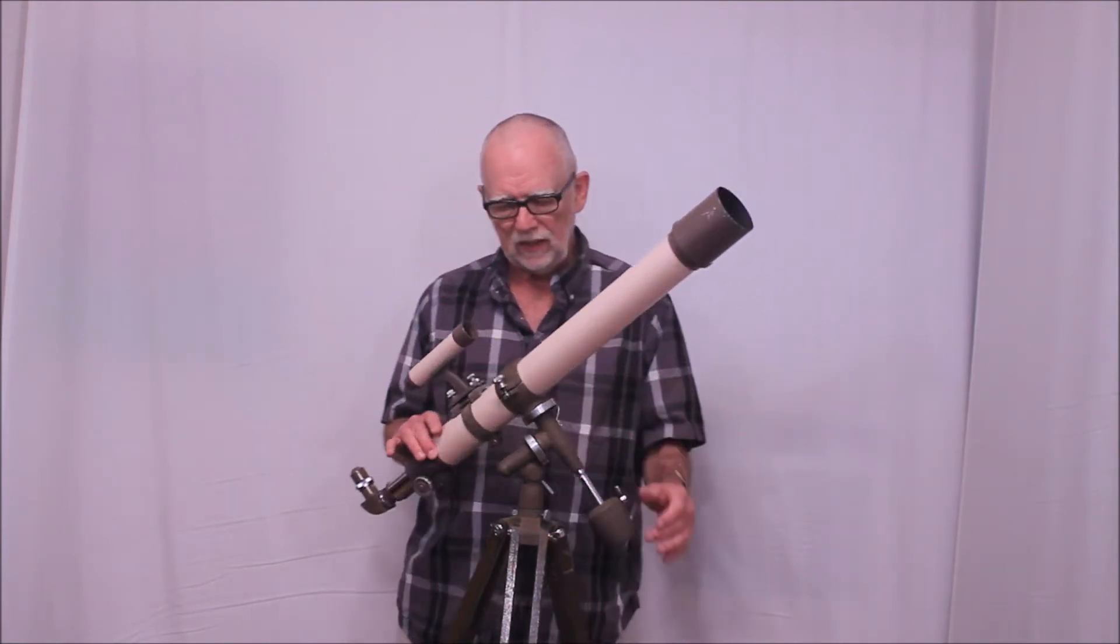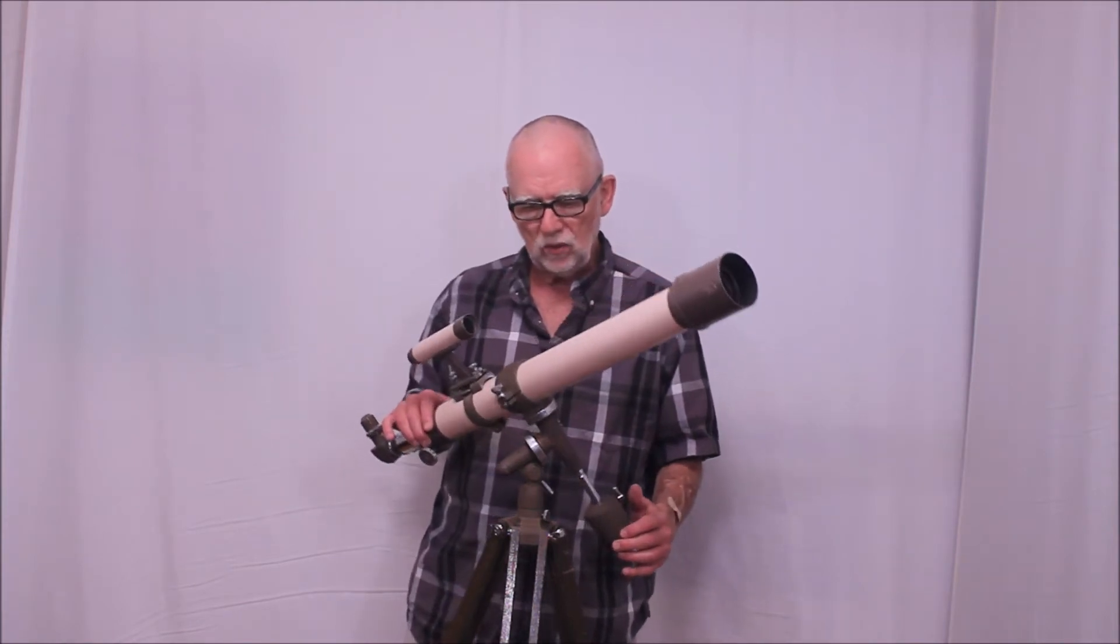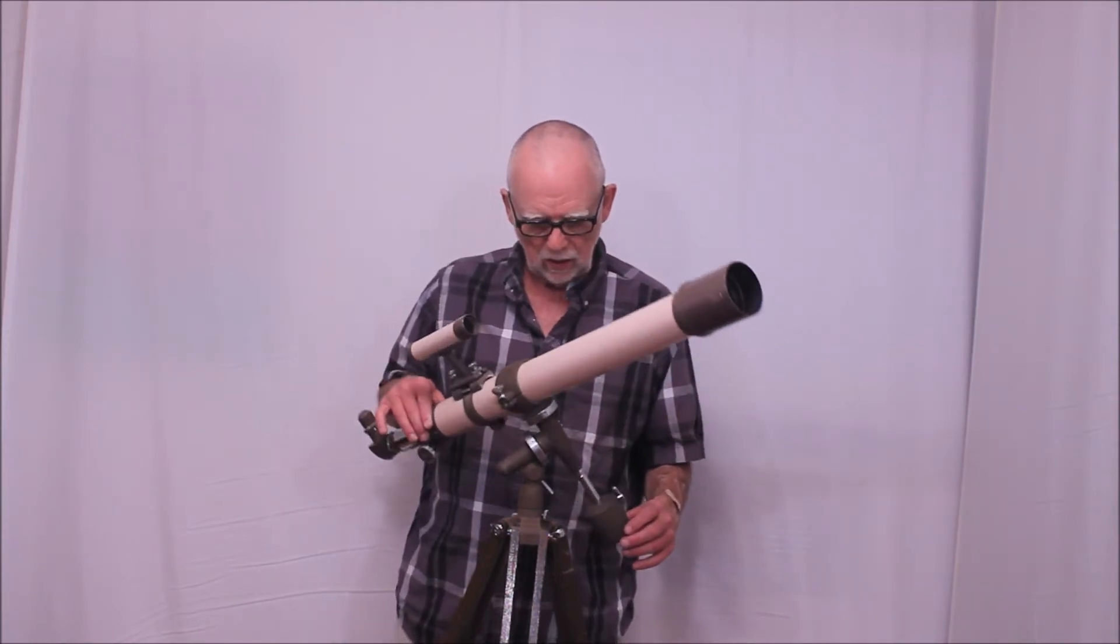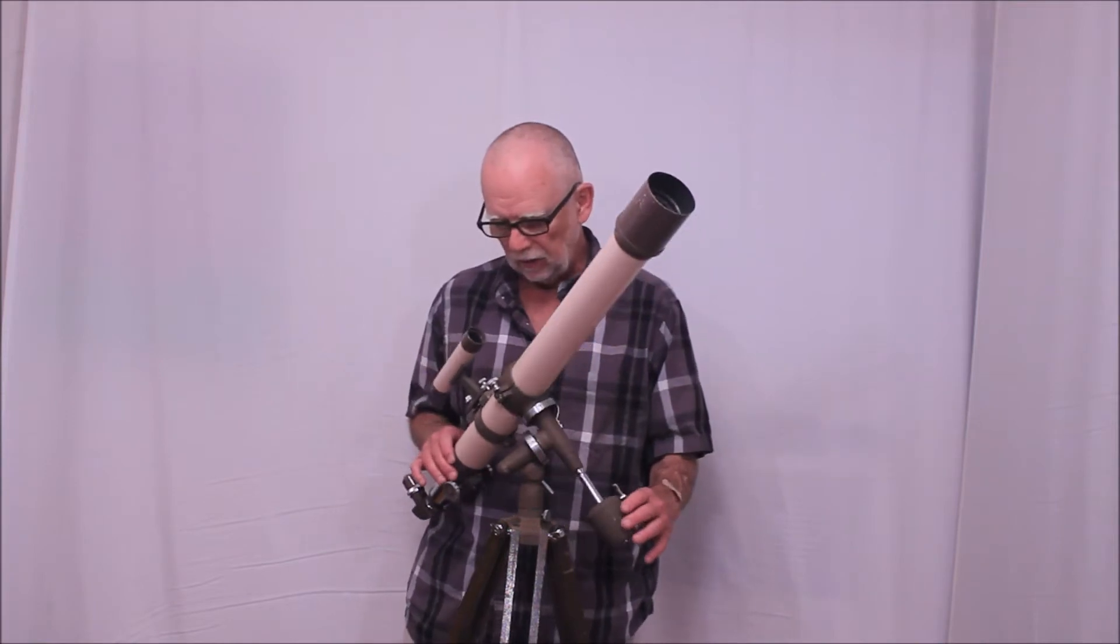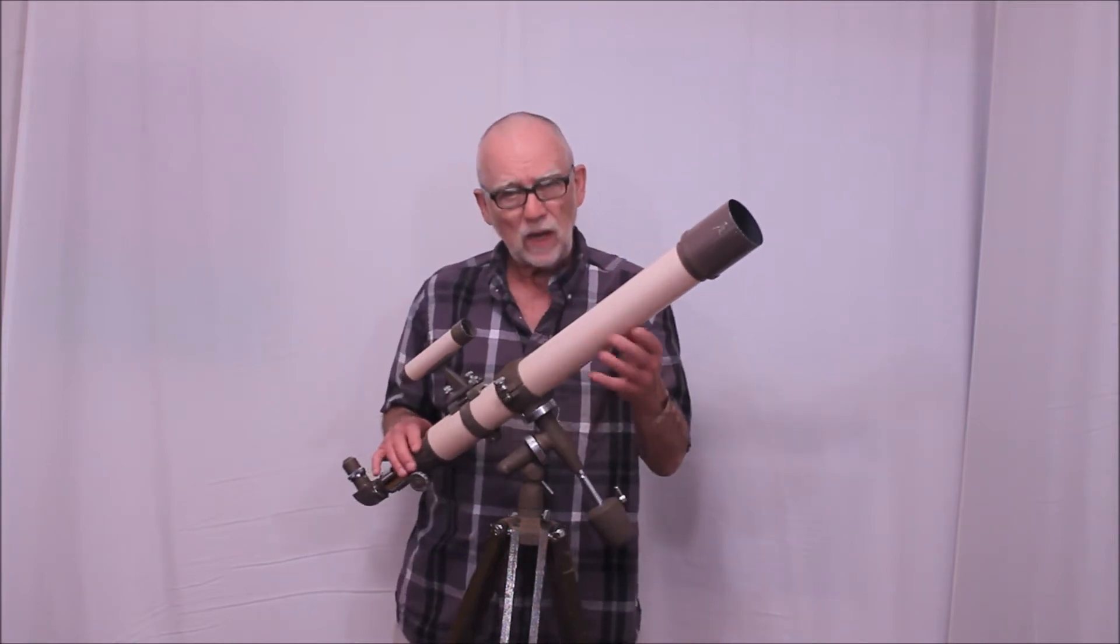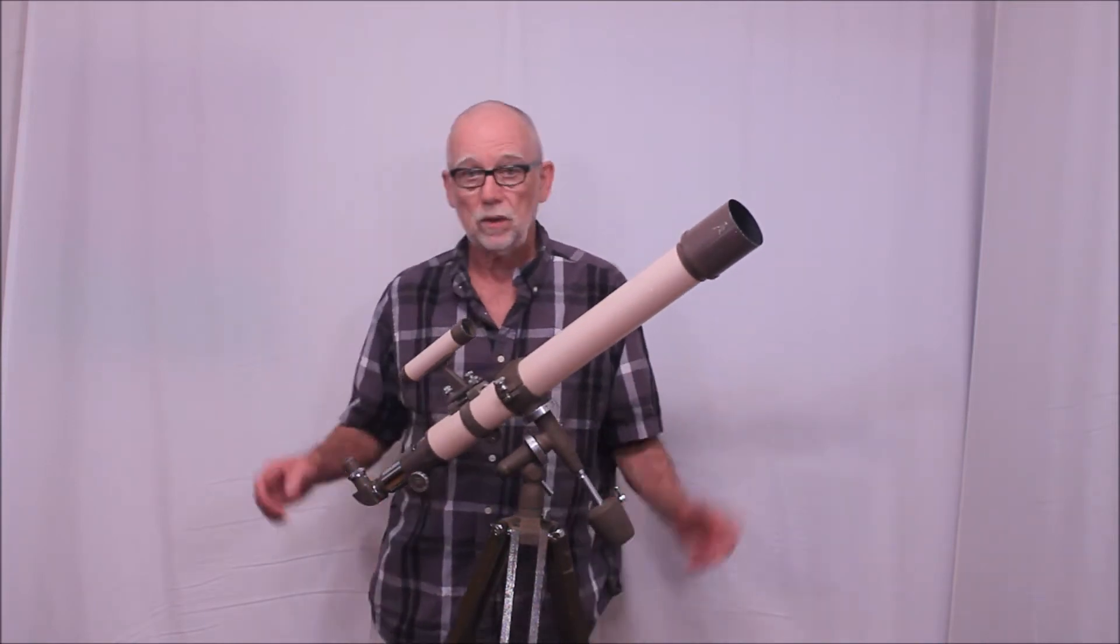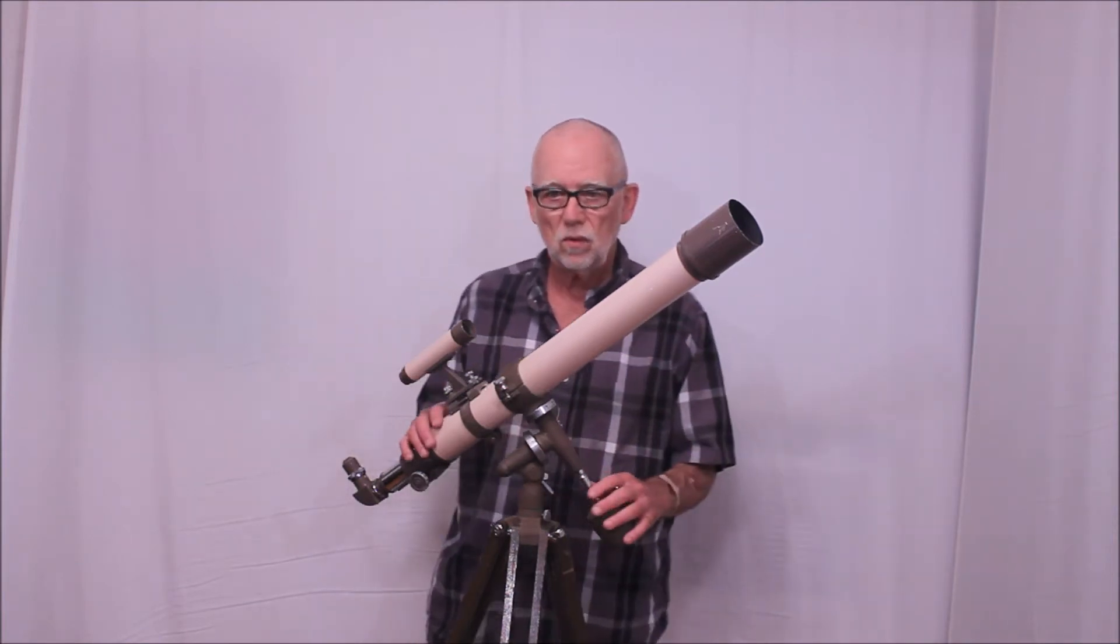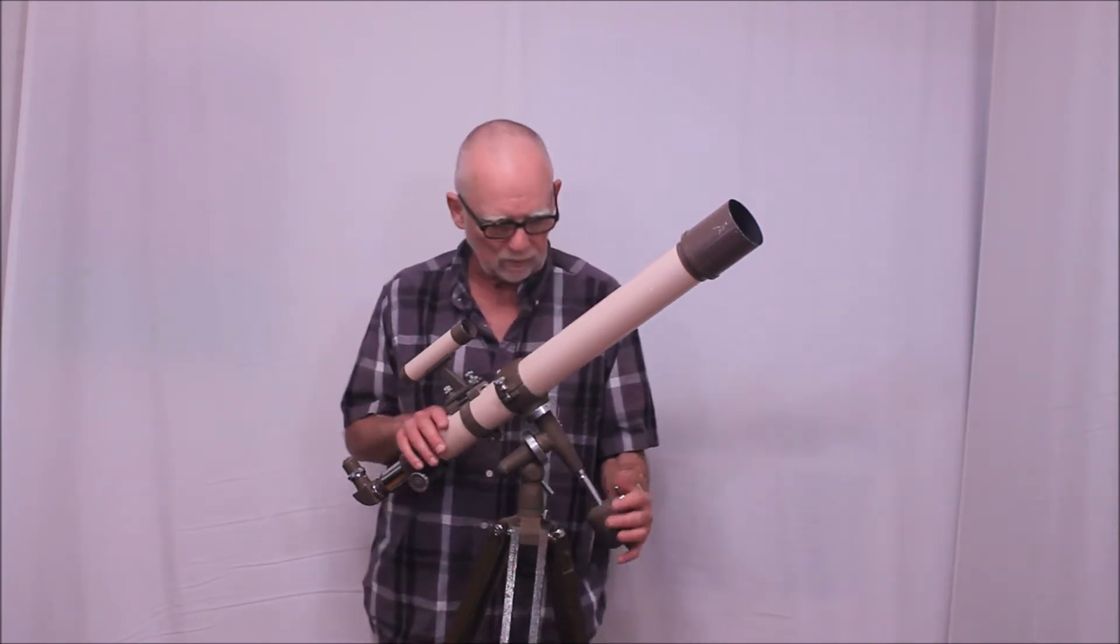If it's well made, something like this can track reasonably well, assuming it's lubricated properly. And it can track pretty well at a modest power. You wouldn't want to run this at 400 or 500 power. Well, of course, you're never going to run a scope like this at that power anyway.